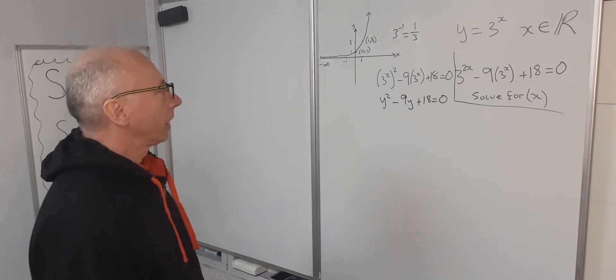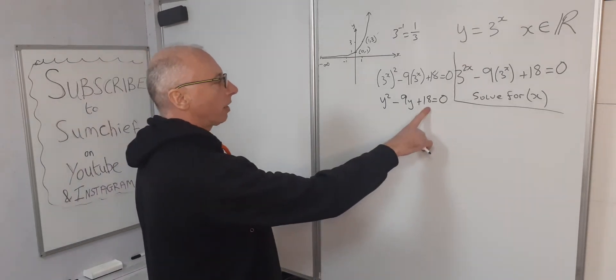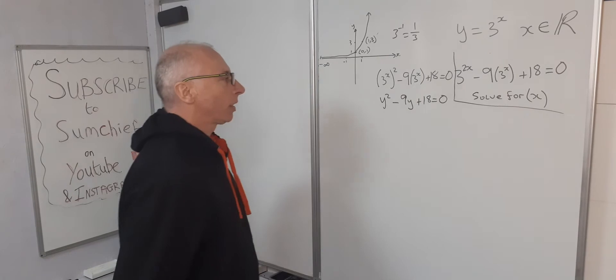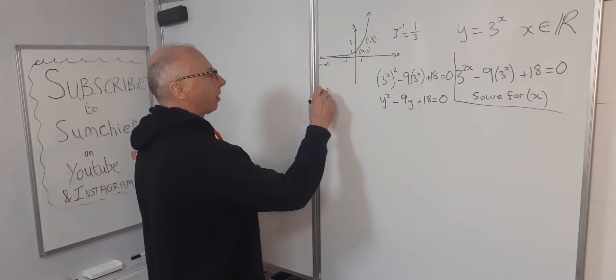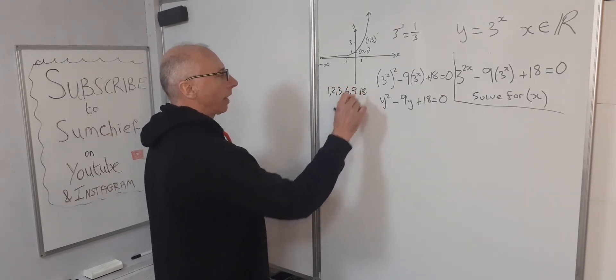Okay, right. Now, how can we solve for this? So we need a factor that comes to plus 18. Now when we add them is minus 9. So our factors of 18 are 1, 2, 3, 6, 9, and 18.